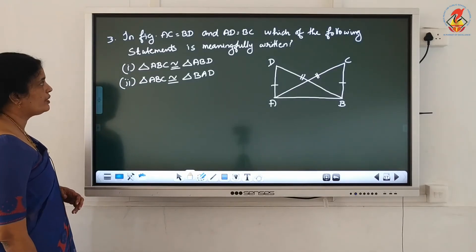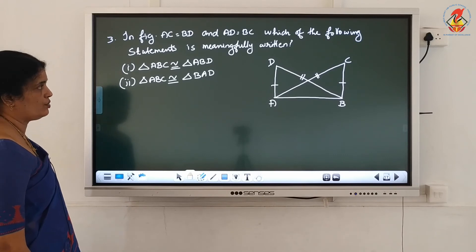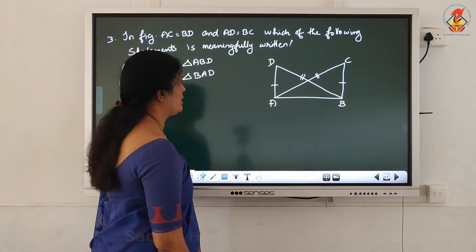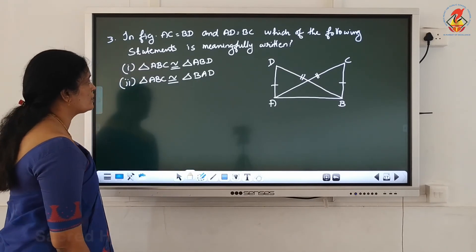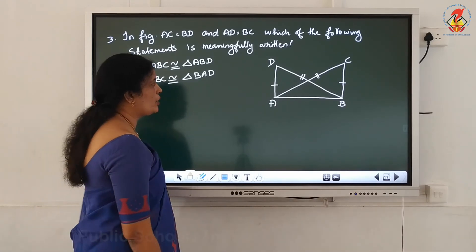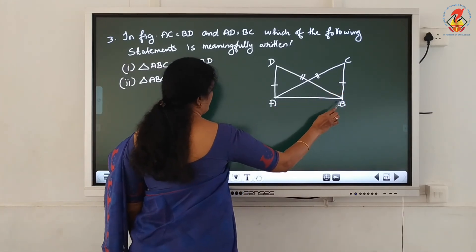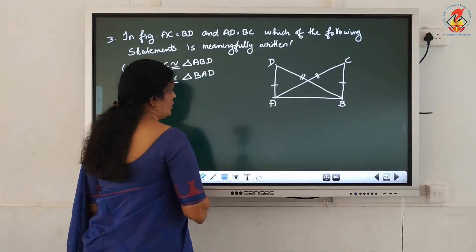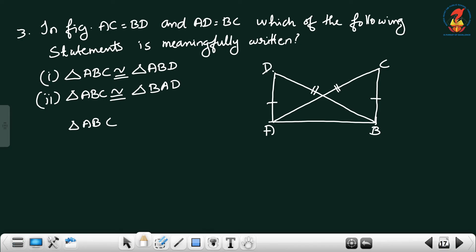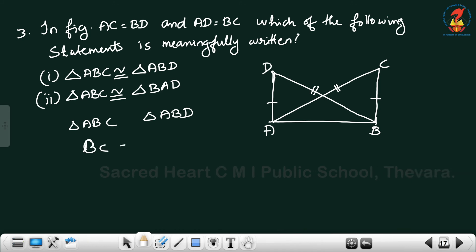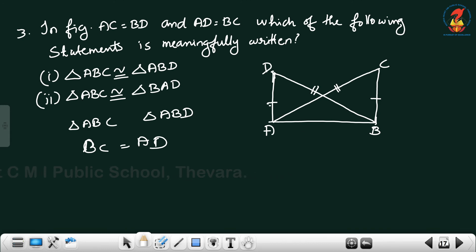Question number 3. In figure, AC equal to BD and AD equal to BC. Which of the following statements is meaningfully written? Triangle ABC congruent to triangle ABD. The 2 triangles are triangle ABC and triangle ABD. In triangle ABC and ABD, BC and AD - single line is on these 2 sides. You should write BC equal to AD. Next, AC equal to BD.